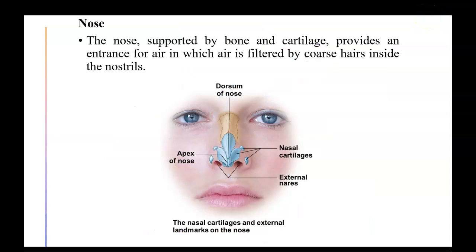The nose is supported by bone and cartilage and provides an entrance for air that is filtered by coarse hairs inside the nostrils. Along with those hairs, mucus helps to trap pathogens and also warms and moistens the incoming air.